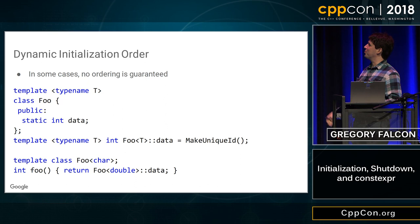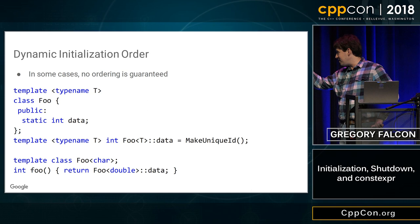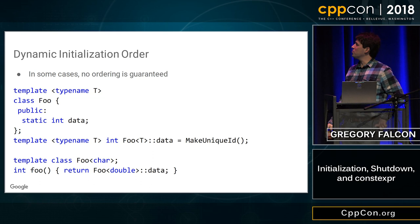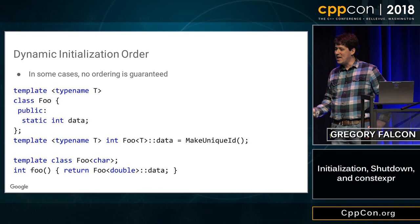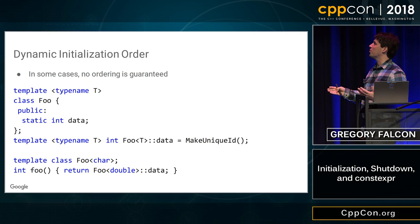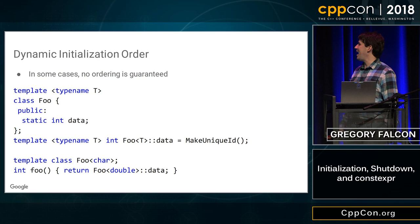Dynamic initialization order for template statics: I've got a template class with a static data member and even a definition for it. Now I've got an object that's not explicitly defined anywhere — it's just implicitly defined. I might explicitly or implicitly instantiate the template, and now I need the definition, which doesn't live anywhere. What is the ordering? The language just says: there are no guarantees. It gets initialized sometime — I can't tell you when.